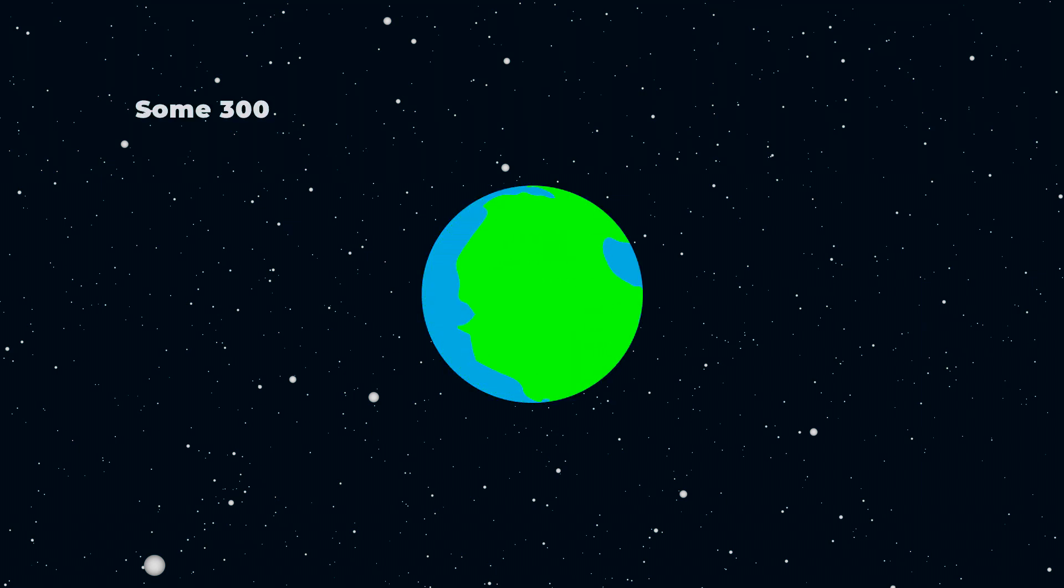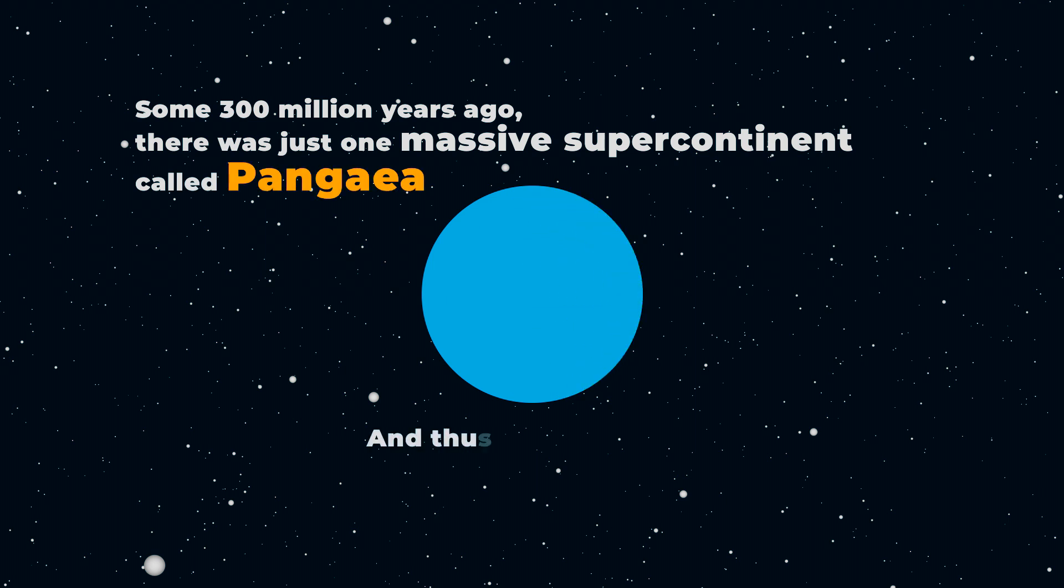Some 300 million years ago, there was just one massive supercontinent called Pangea, and there was just one giant ocean called Panthalassa.